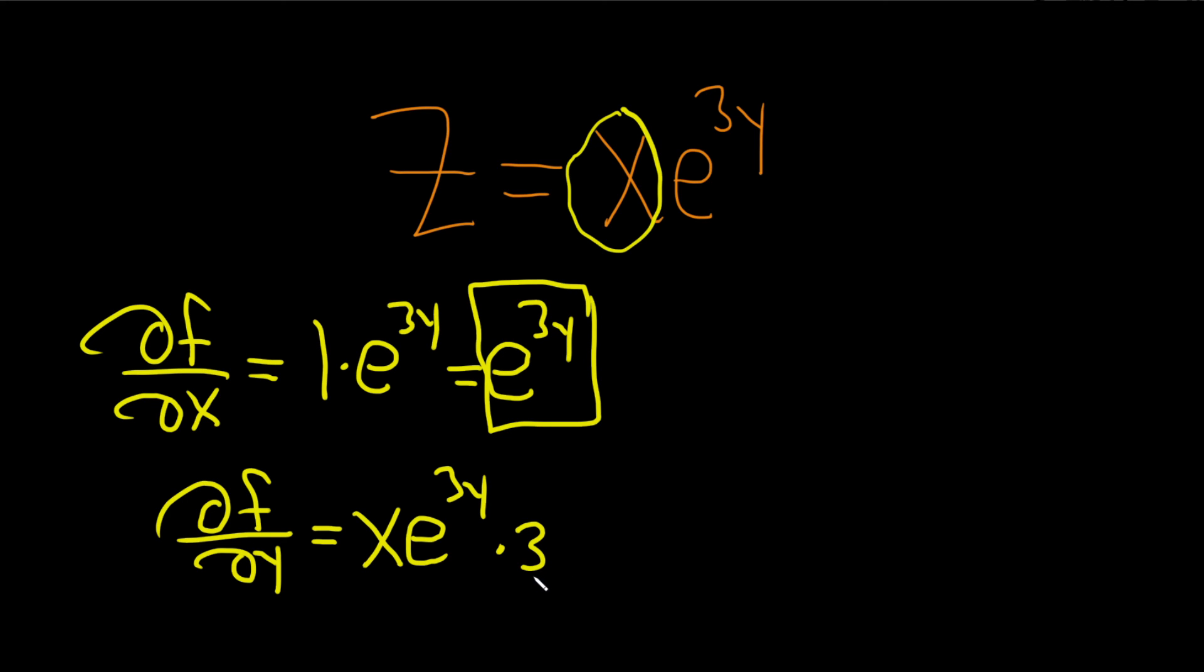As a good last step, maybe we can put the 3 in the front. So this would be 3xe^(3y), and that would be the final answer. I hope this video has been helpful.